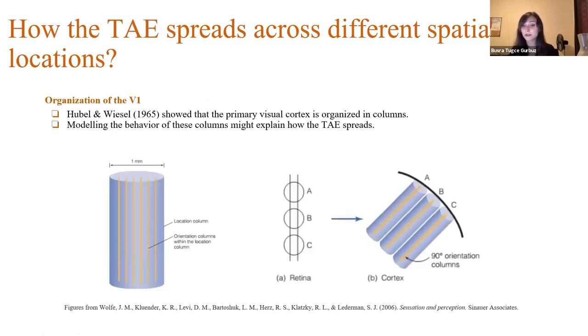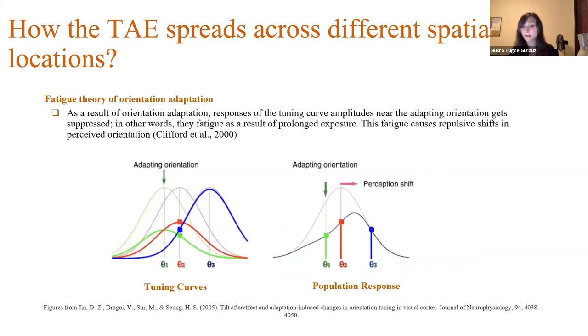Hubel and Wiesel showed that primary visual cortex is organized in columns. It's argued that we have location columns in our primary visual cortex that are sensitive to each location. And in each of these location columns, there are orientation-selective neurons that have some preferred orientation activated most at that preferred orientation. And also, as a result of orientation adaptation, responses of tuning curve amplitudes near the adapting orientation get suppressed. In other words, they fatigue as a result of prolonged exposure. And this fatigue causes repulsive shift in the perceived orientation. And this is called fatigue theory of orientation adaptation.